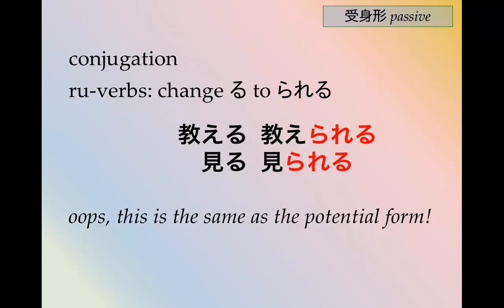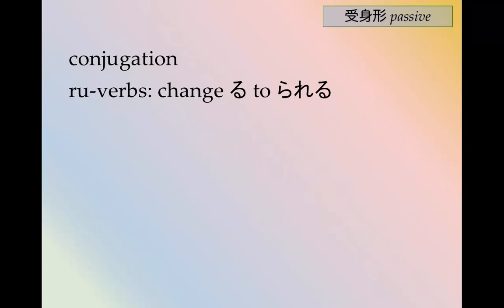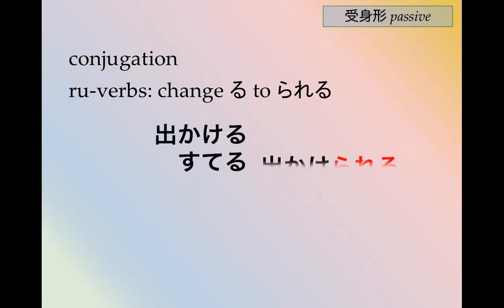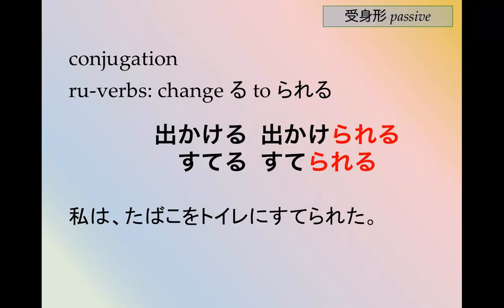The potential form means 'I can teach' or 'I can see.' So you have to distinguish them via context as well as particles. る verbs change from る to られる. 出かける becomes 出かけられる. 捨てられる — and so this looks exactly the same as the potential form.